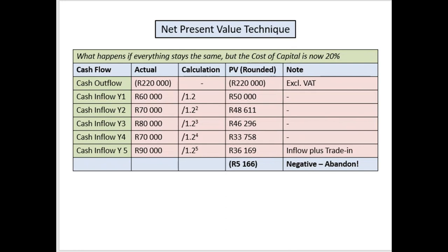Now we say: if it beats fifteen percent, how good is this investment? Let's have a look at twenty percent. Everything stays the same but the cost of capital is now twenty percent — that's the only thing that changes. The cash outflow is still exactly the same, the inflows are exactly the same. The difference is that this factor here has changed from 1.15 to 1.2, because your percentage is now twenty percent. Zero point two plus one is one point two.